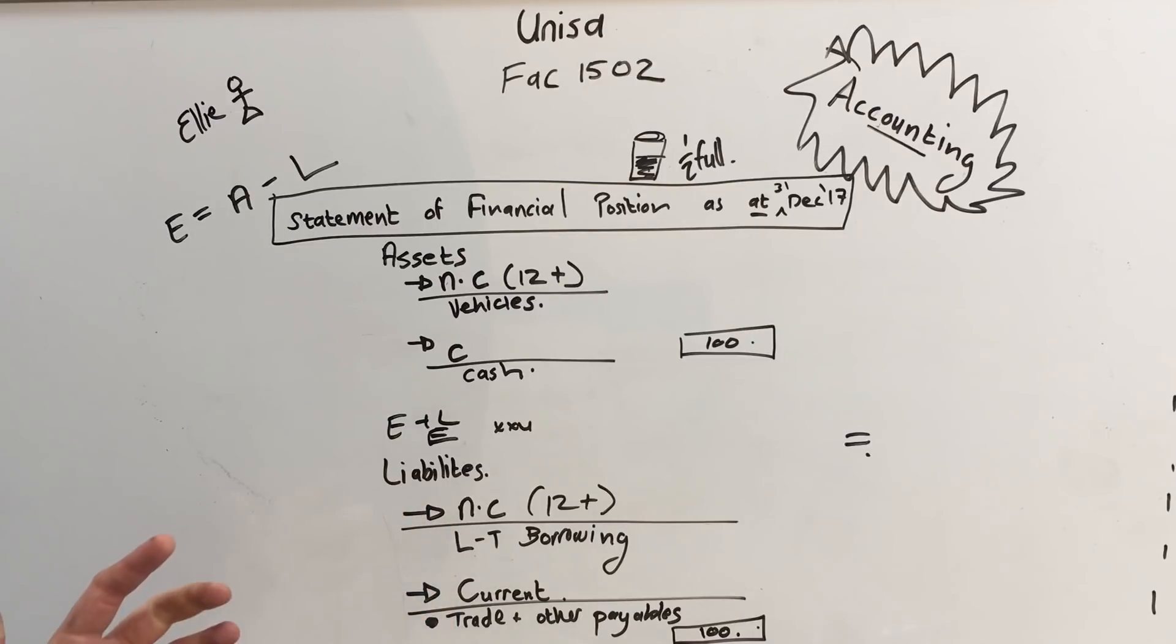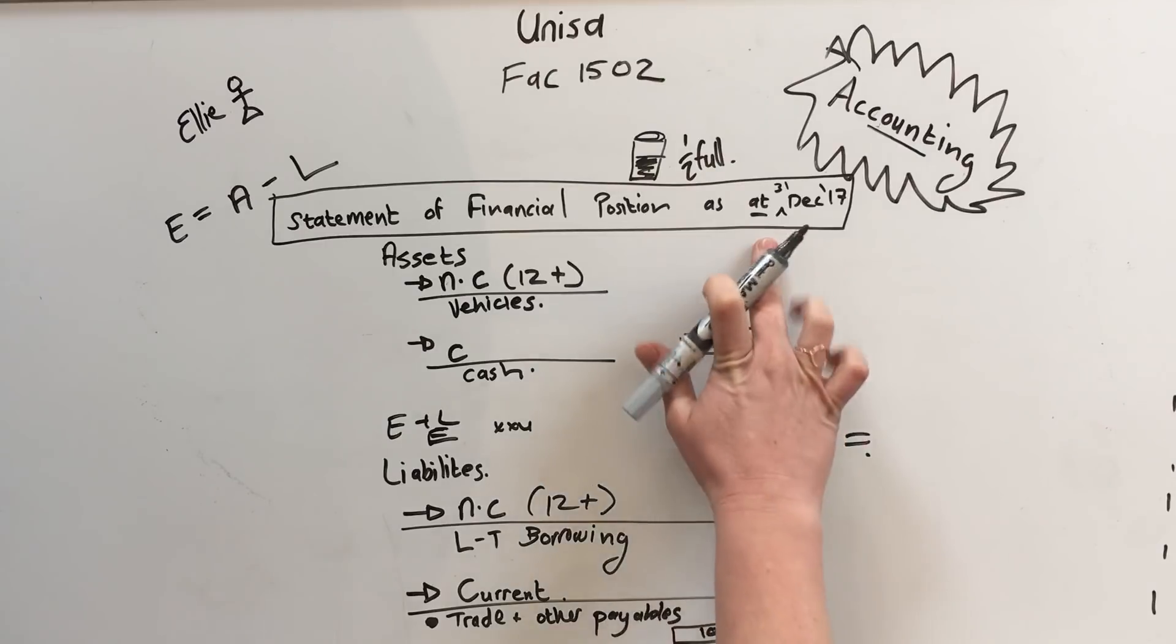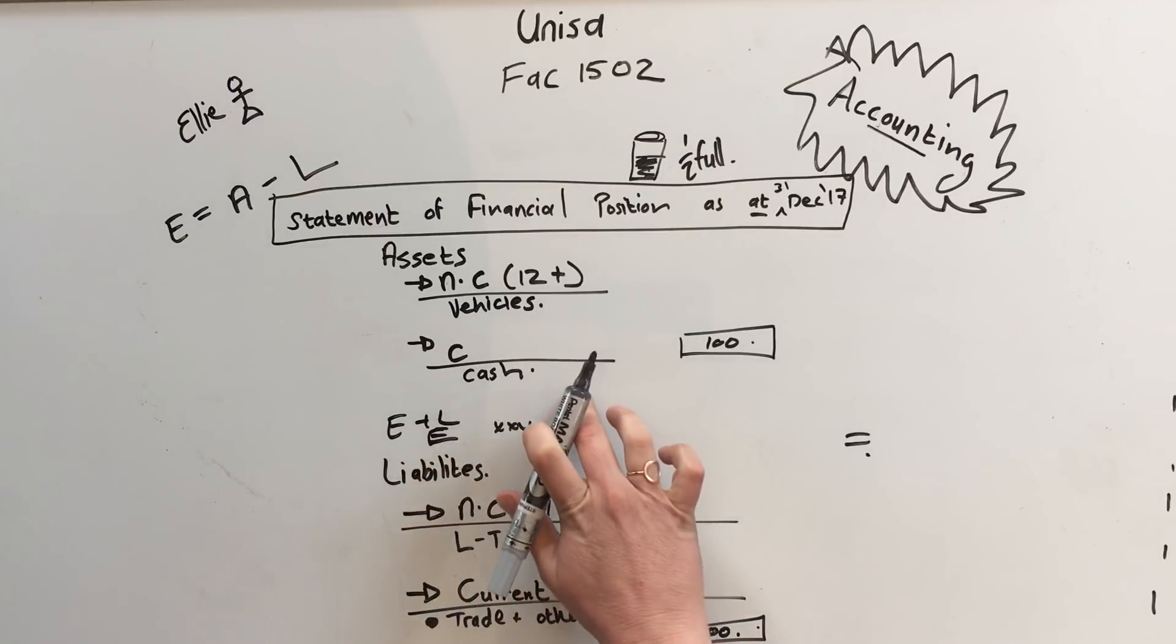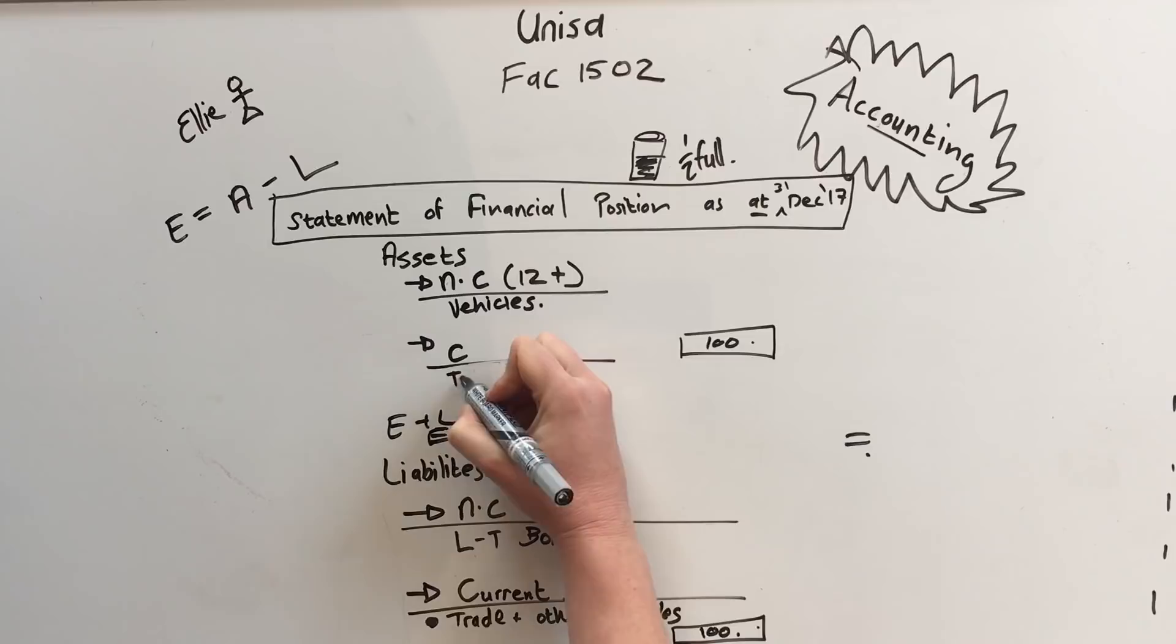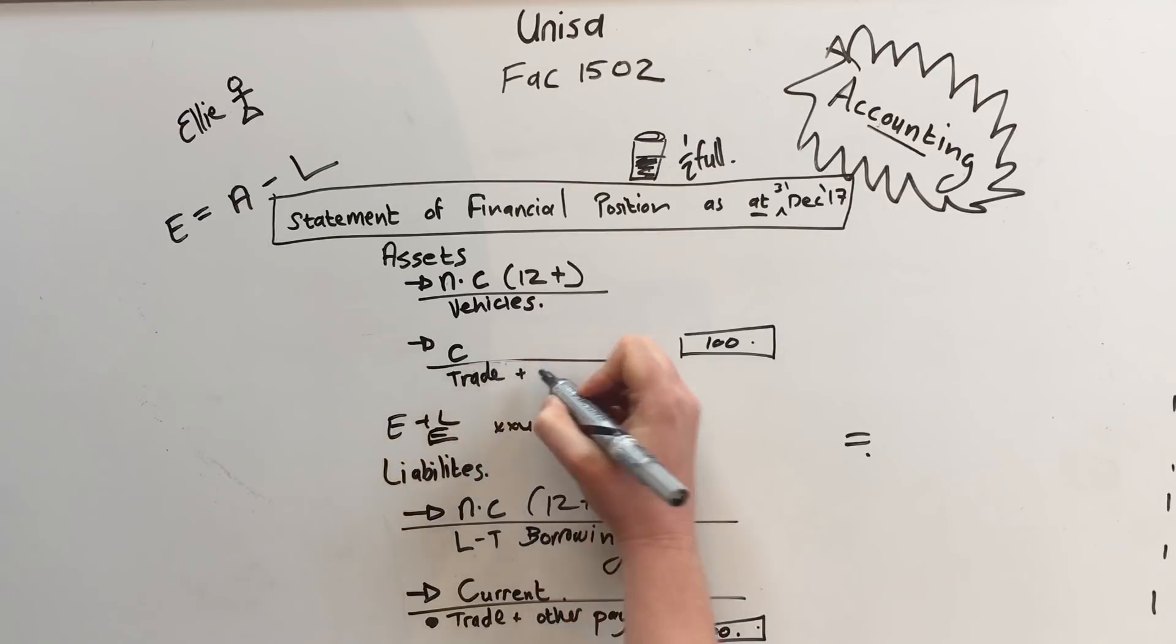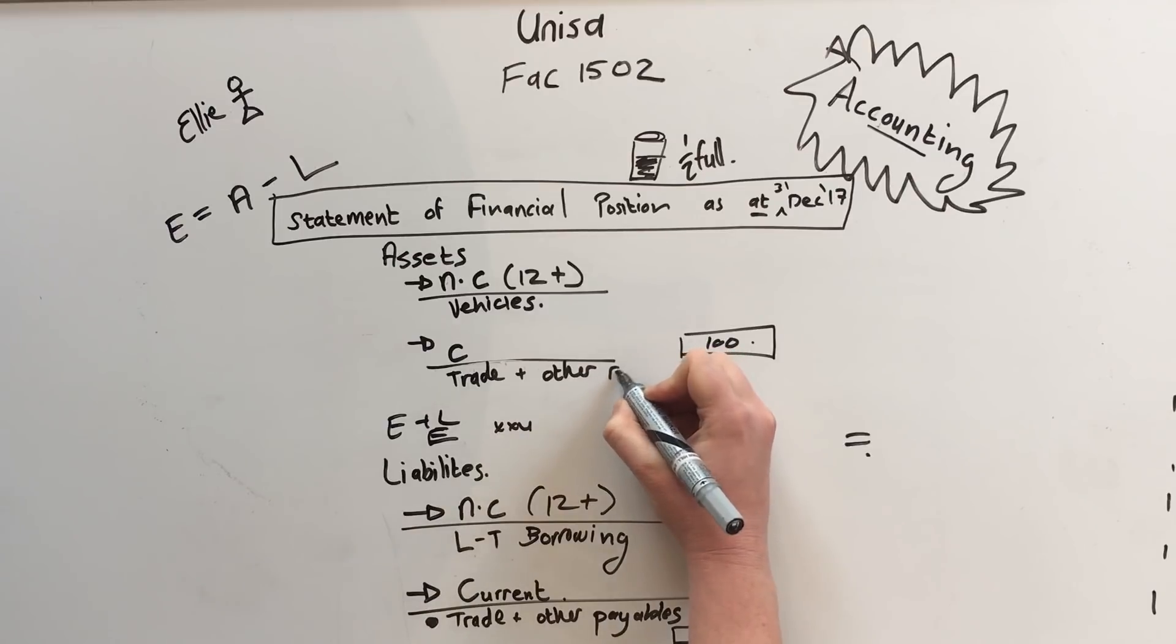We might as well have some customers here at the top that bought pizza on credit and they promised to still pay us but it's now at 31 December they haven't paid us yet they must still pay us. So we're going to put that down here as trade and other receivables. This is money that people owe us. And that is an asset.